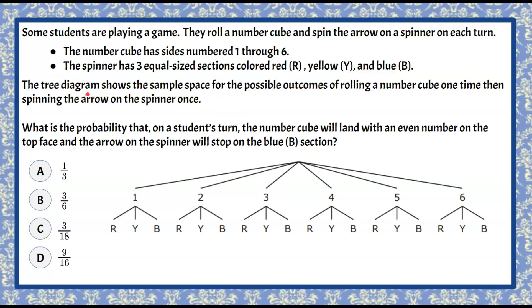The tree diagram shows the sample space for the possible outcomes of rolling a number cube one time then spinning the arrow on the spinner once.